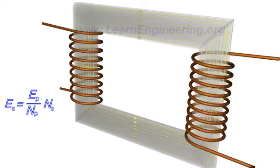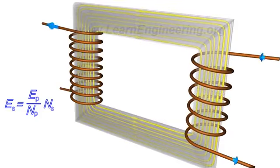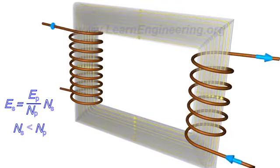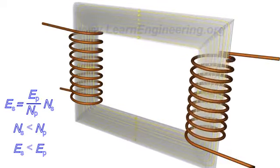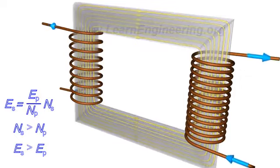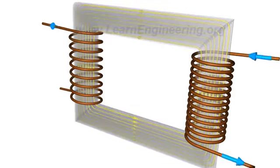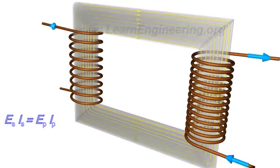This simply means that with fewer turns in the secondary than in primary, one can lower the voltage. For the reverse case, one can increase the voltage. But since energy is conserved, the primary and secondary currents have to obey the following relationship.